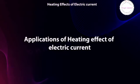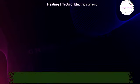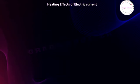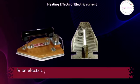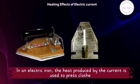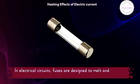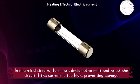Applications of Joule's law: electric heaters convert electrical energy entirely into heat to warm a room. In an electric iron, the heat produced by the current is used to press clothes. In electrical circuits, fuses are designed to melt and break the circuit if the current is too high, preventing damage — this melting is due to the heating effect described by Joule's law.